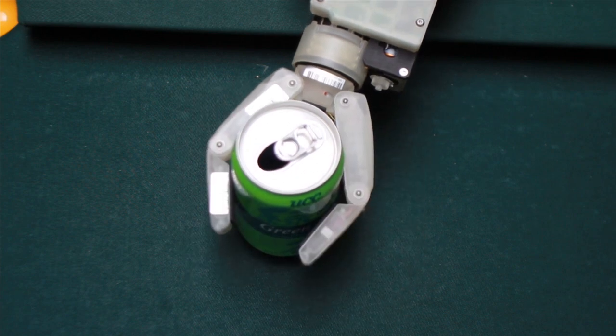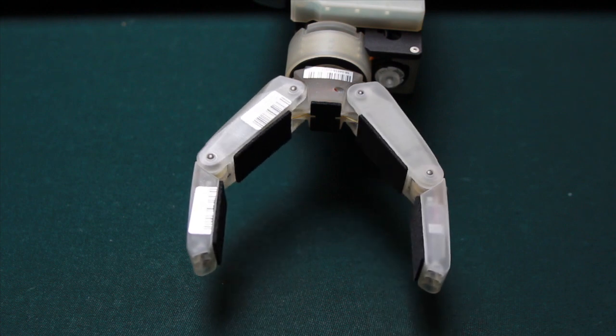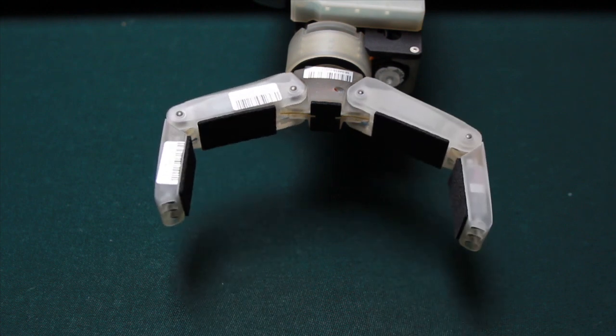To integrate this gripper with the PR2 robot, the first task was to create a Universal Robot Description File containing an analytical model of its actuation mechanism.